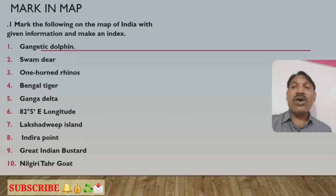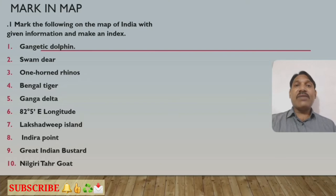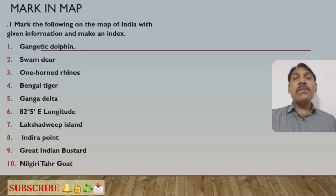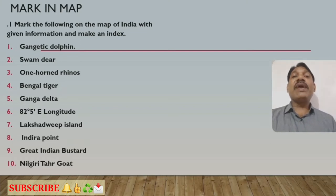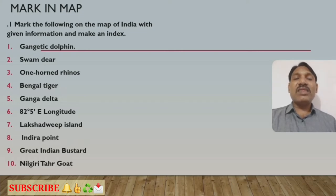Continuing the example question: ninth, Great Indian Bustard; and tenth, Nilgiri Thar goat. Such kinds of things can be asked to mark on the map of India. I will now explain how to mark these things on the map of India and how to make the index. Without further ado, let's start with the marking on the map.